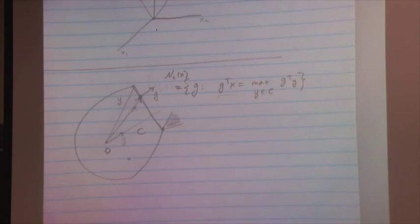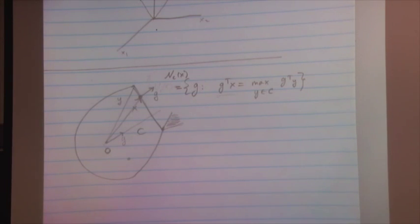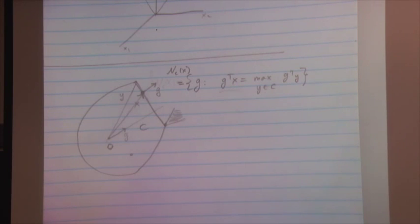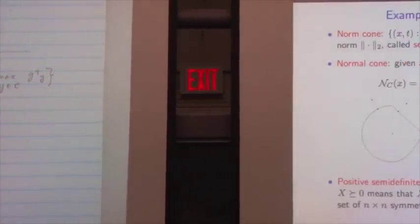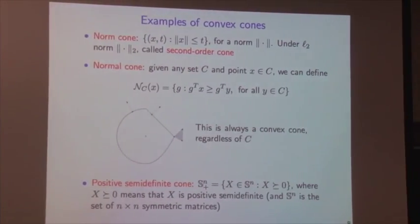Approach 2, more elegant: define the affine function f(x) = B − Σx_i A_i. The LMI set is exactly the affine pre-image of the PSD cone under f. Since the PSD cone is convex and affine pre-images preserve convexity, we're done immediately — no need to go back to the definition.